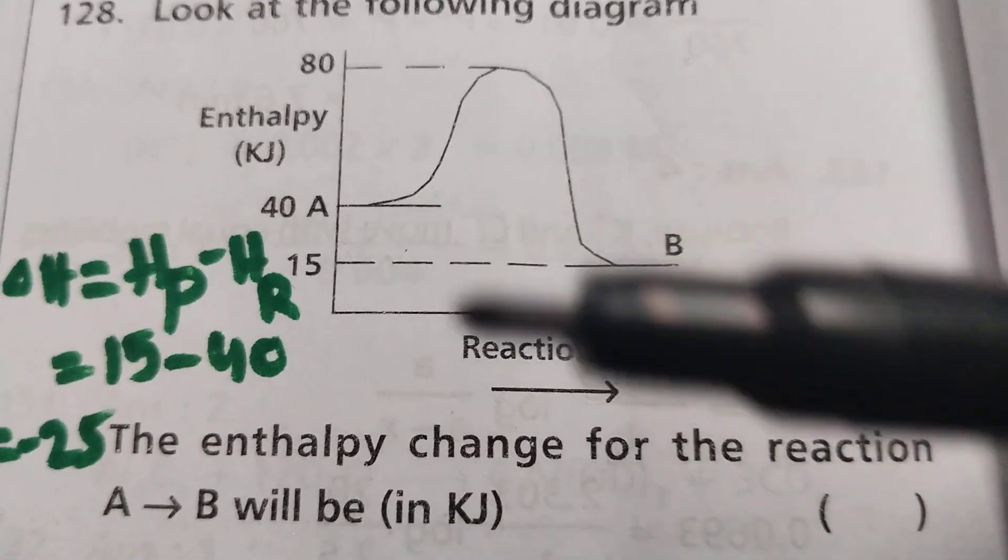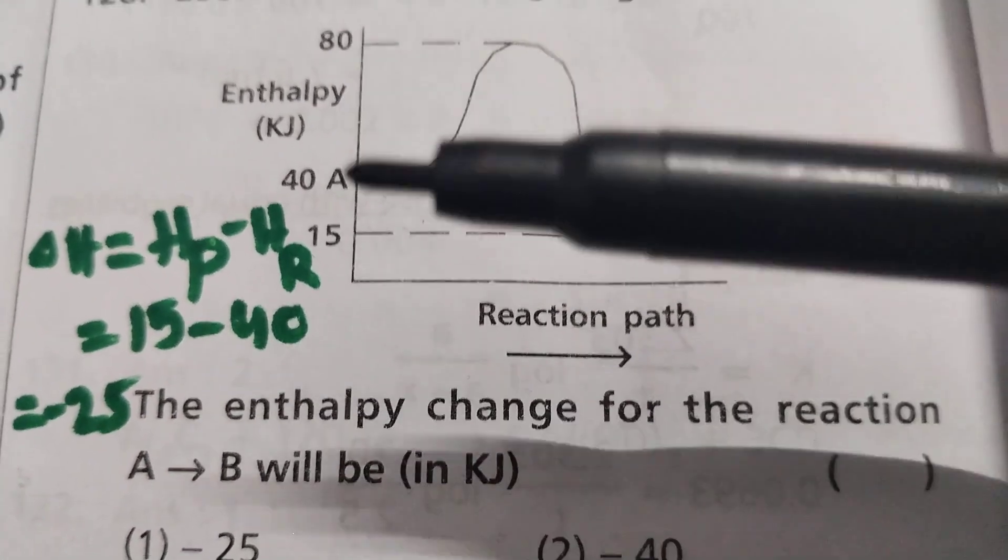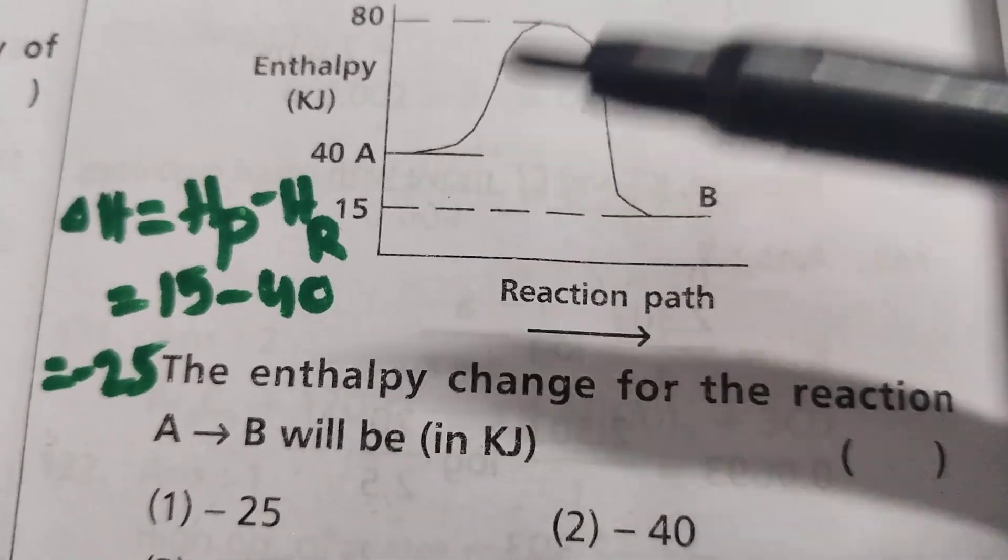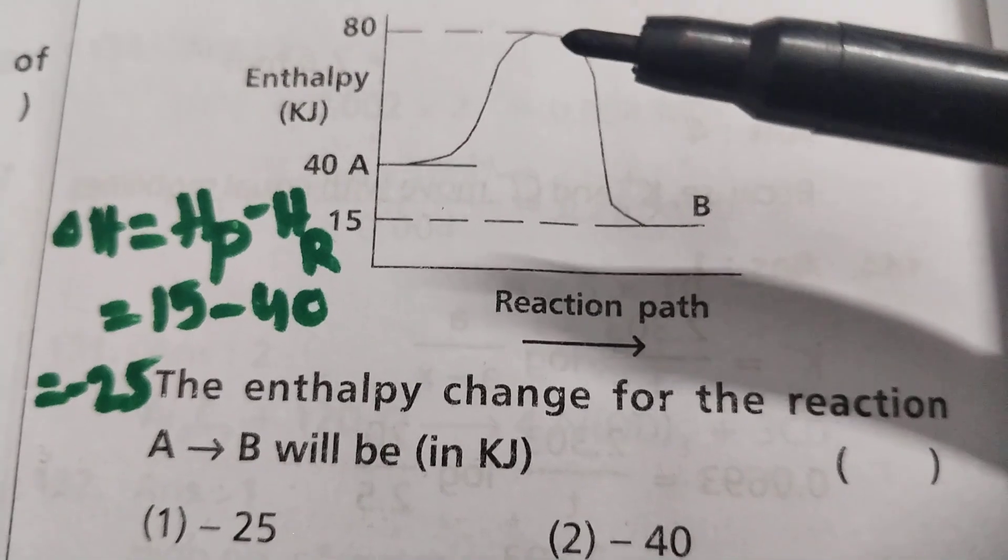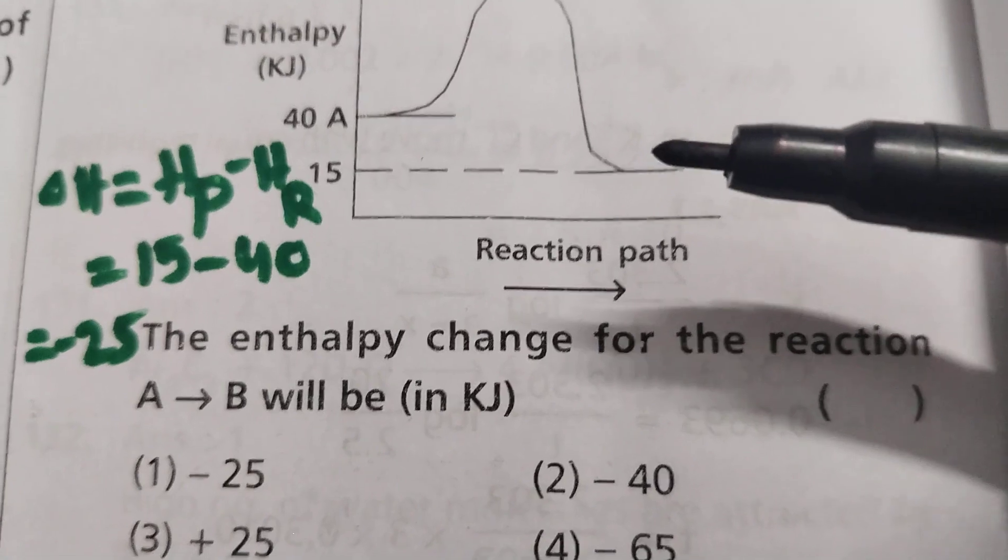Look at the following diagram. Reaction path on x-axis, enthalpy on y-axis. You see, A - this is the activated complex, intermediate. This is B. A is the reactant, B is the products.